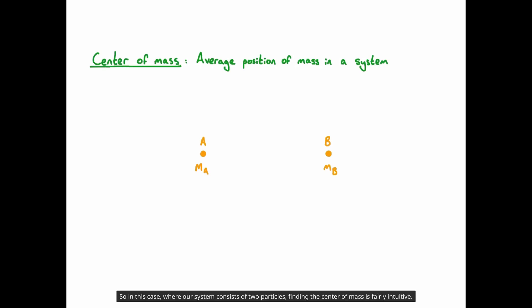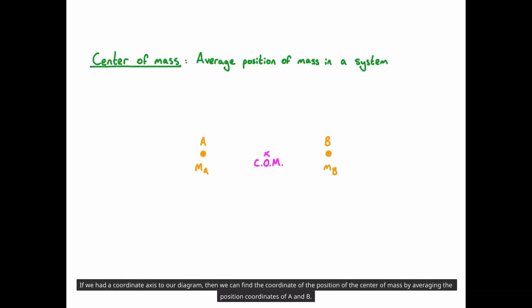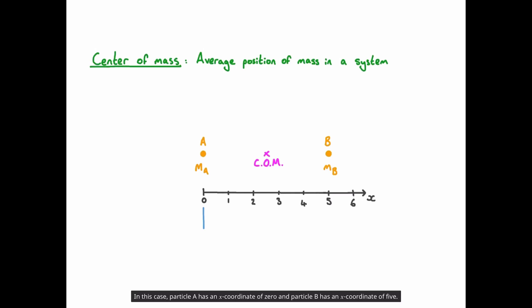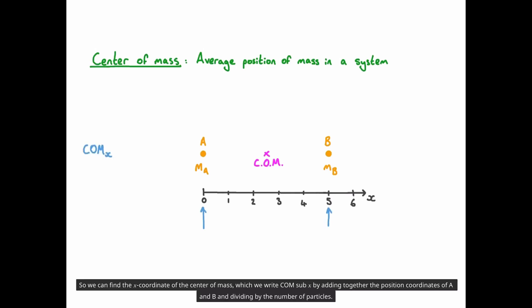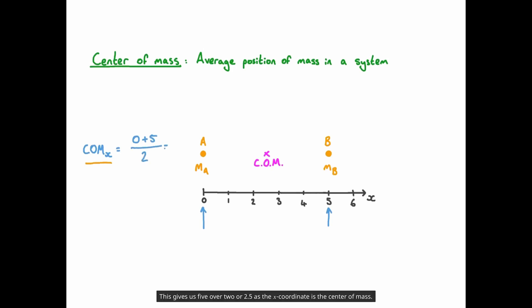So in this case, where our system consists of two particles, finding the centre of mass is fairly intuitive — it's simply located at the midpoint of the two particles. If we add a coordinate axis to our diagram, then we can find the coordinate of the position of the centre of mass by averaging the position coordinates of A and B. Particle A has an x-coordinate of 0 and particle B has an x-coordinate of 5, so the x-coordinate of the centre of mass, which we write com sub x, is found by adding together the position coordinates of A and B and dividing by the number of particles. This gives us 5 over 2, or 2.5, as the x-coordinate of the centre of mass.